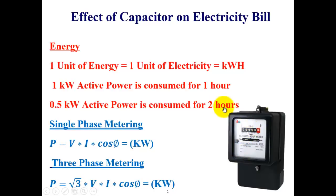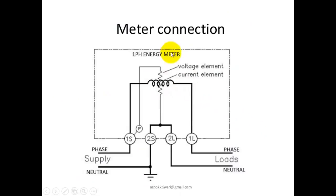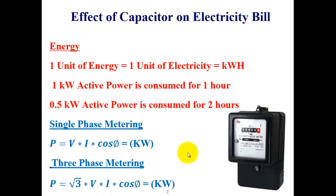This device is called the energy meter, which is used to calculate the total energy consumed by the consumer. Looking at the internal diagram: there are two terminals for the incoming supply and two terminals for the outgoing supply. This meter can measure the current flowing through it and also measure the voltage being supplied to the consumer.